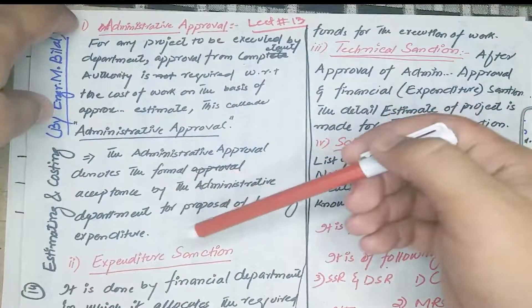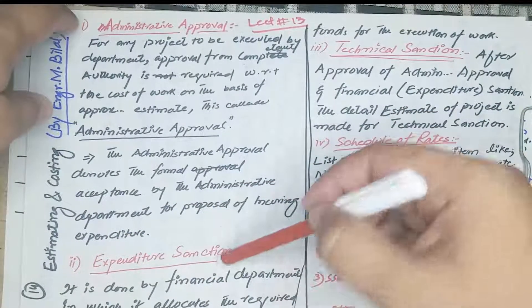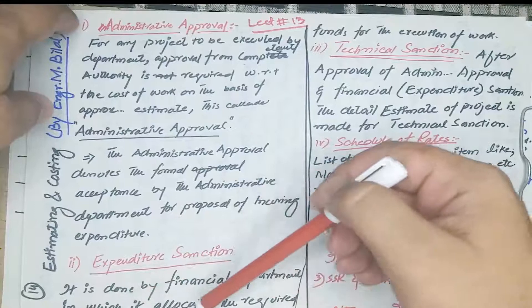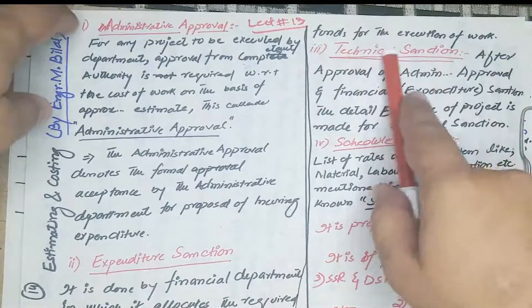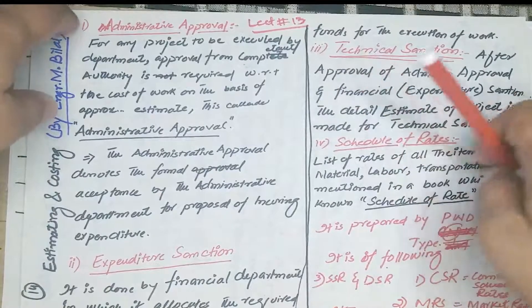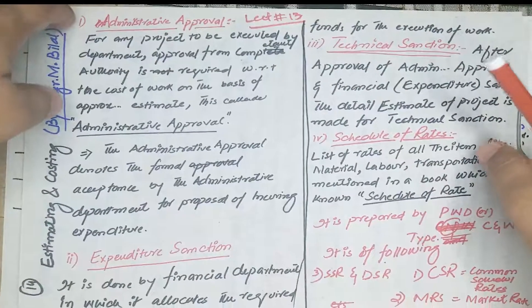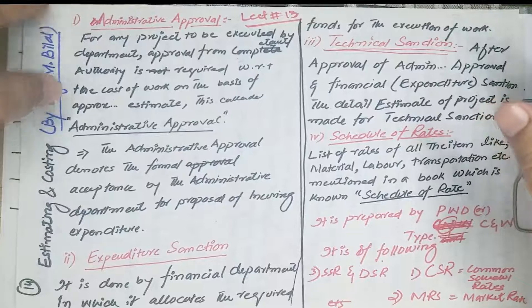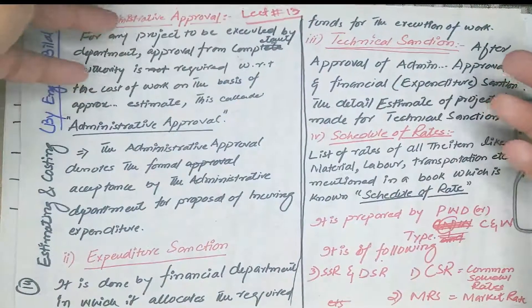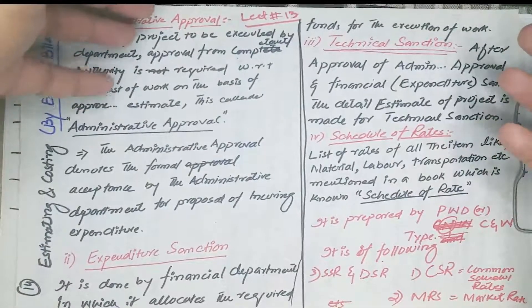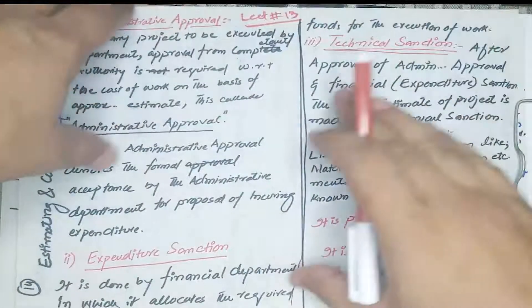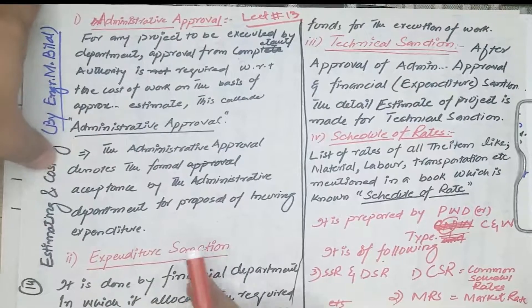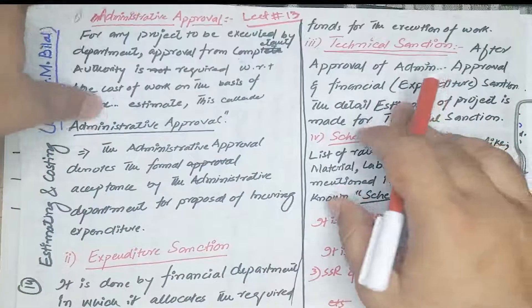What is expenditure sanction? It is done by the Finance Department, in which it allocates the required fund for the execution of the work. For example, if we approve the project but have no fund, we cannot execute or complete the project. Therefore, after Administrative Approval, we must obtain expenditure sanction from the concerned Finance Department.